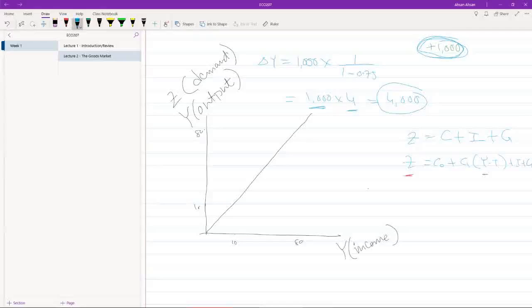So we have z here, we have y here. If we plot z in terms of y, notice that there is an autonomous spending part, so this equation is not going to start from the origin. It's going to start from somewhere up here. Even when income is zero, there will be some demand because there is autonomous consumption and autonomous spending. This is what the demand function is going to look like.